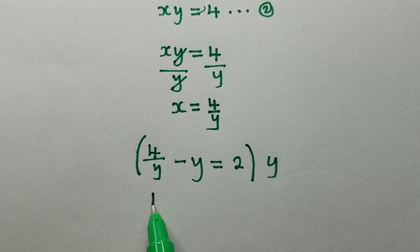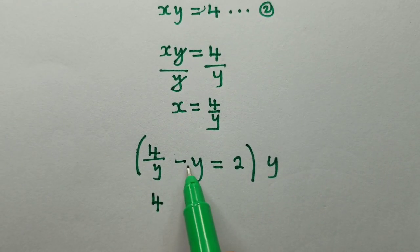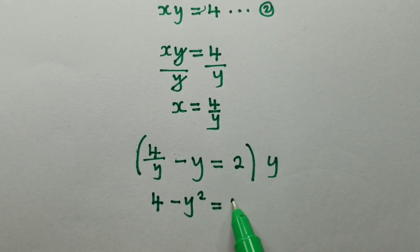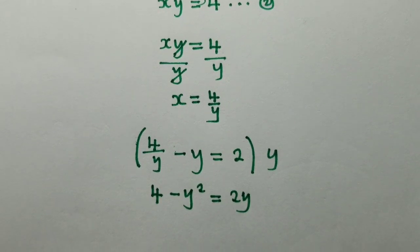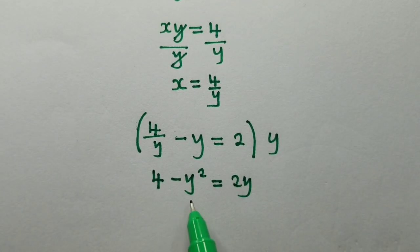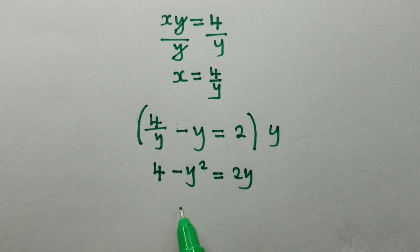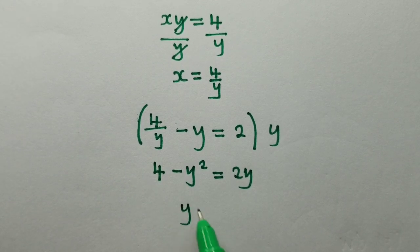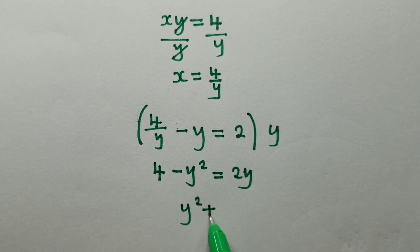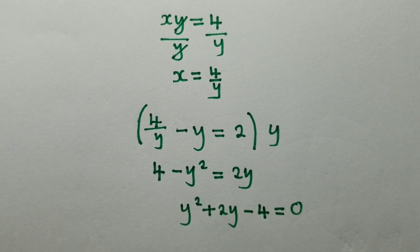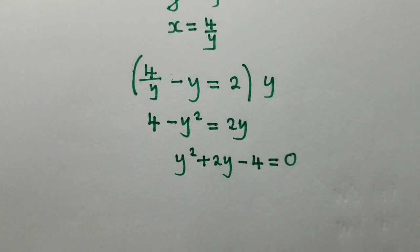We shall remain with 4. Here, when we say negative y times y, we shall have negative y squared, which is equal to 2 times y, which will be 2y. So this is what we have. If you can see, this is a quadratic equation. So we can put it in standard form. Putting this quadratic in standard form, we shall have y squared plus 2y minus 4 is equal to 0. So this is the standard form of the quadratic equation.